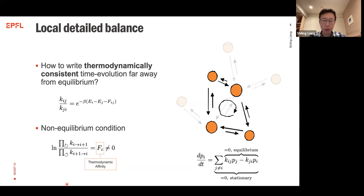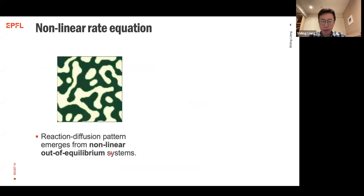The system is out of equilibrium when one can find a cycle for which the thermodynamic affinity defined on that cycle is nonzero. However, a master equation, which is linear, is not sufficient to describe nonlinear symmetry breaking.